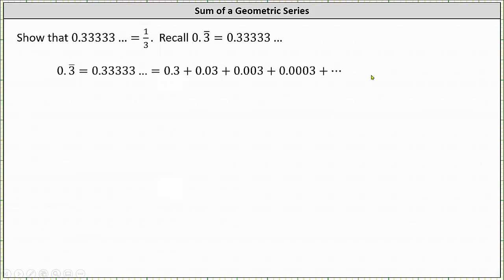We'll factor three from the right side of the equation, which gives us three times the sum of 0.1, 0.01, 0.001, and so on.